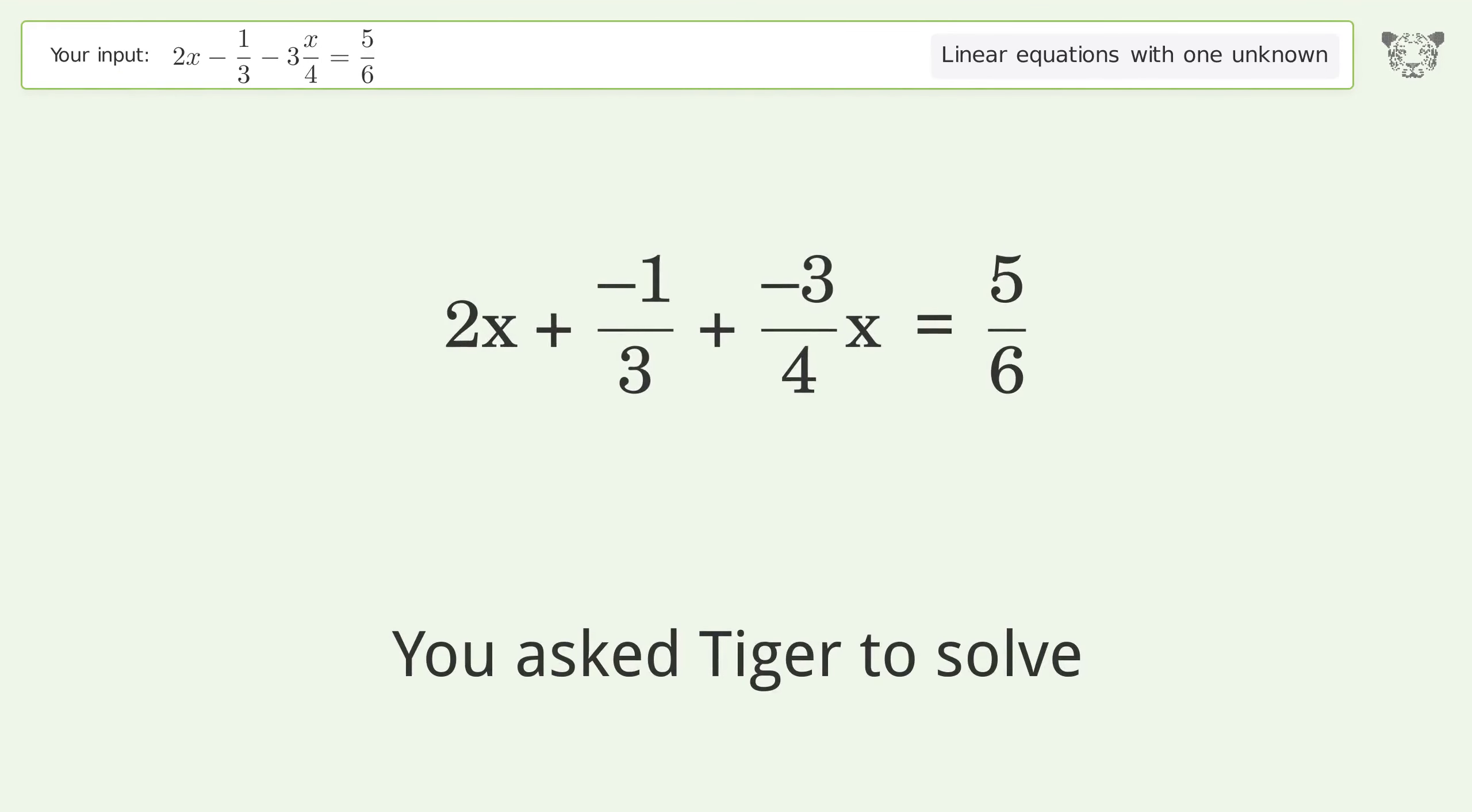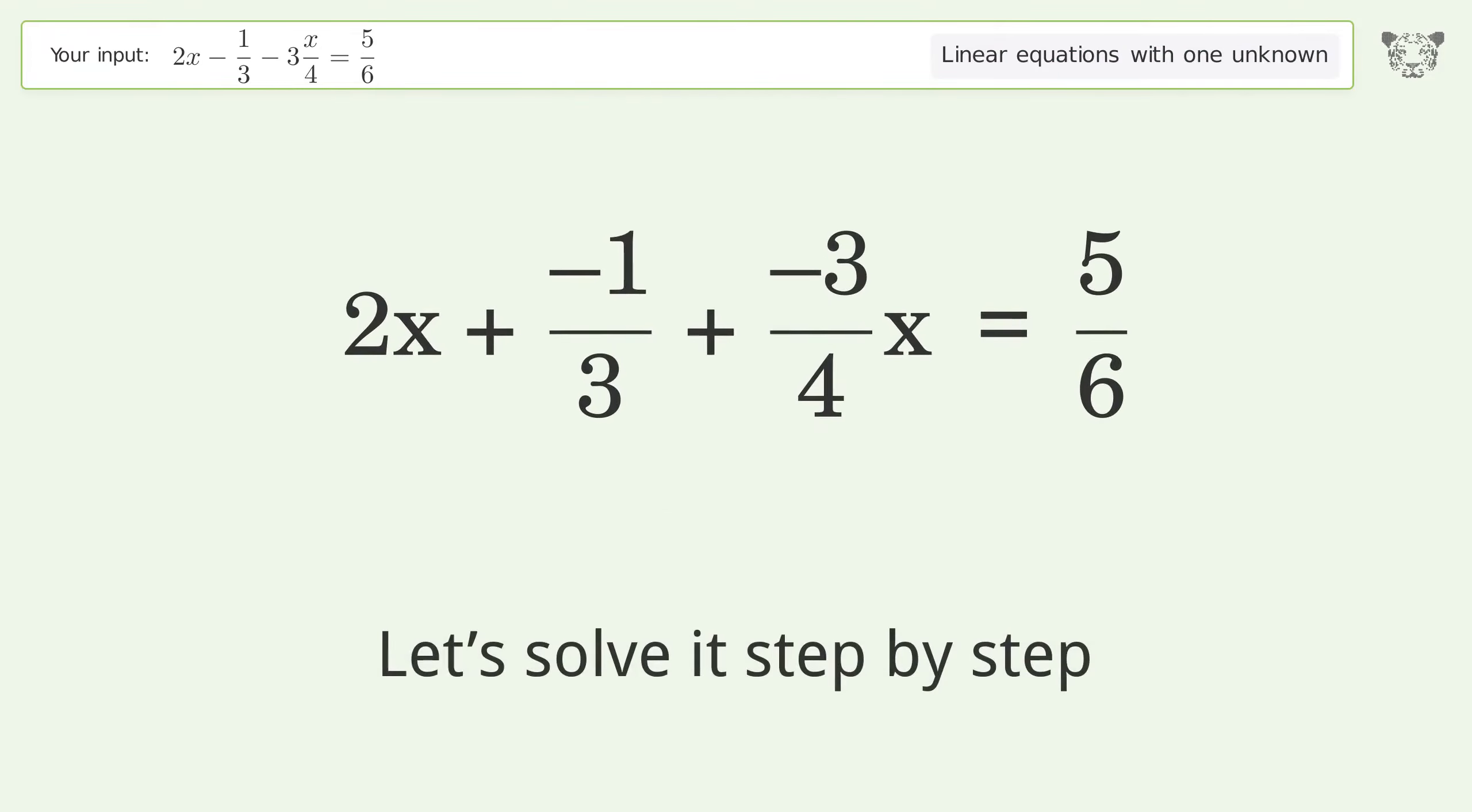You asked Tiger to solve this linear equation with one unknown. The final result is x equals 14 over 15. Let's solve it step by step.